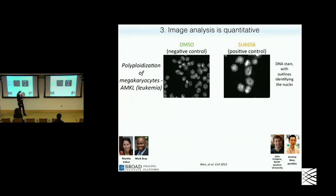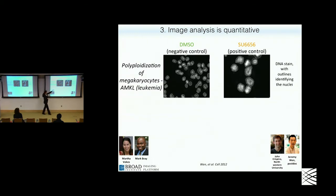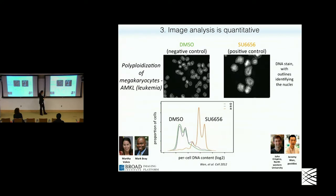Image analysis is quantitative, and here I want to drive the point home with a specific project. John Crispino from Northwestern University was interested in a particular type of leukemia and wanted to find compounds that would cause these cells to become polyploid. Here's what the cells look like with their DNA stain — the software has circled each individual nucleus. A positive control causes the cells to replicate their DNA but not divide, producing these gigantic nuclei. By eye you can say they're bigger, but by image analysis you can precisely quantify the DNA content.